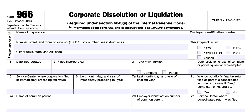A corporation must recognize gain or loss on the distribution of its assets in the complete liquidation of its stock. For purposes of determining gain or loss, the distributed assets are valued at fair market value. There are exceptions to this rule that apply to a liquidation of a subsidiary and to a distribution that is made according to a plan of reorganization.